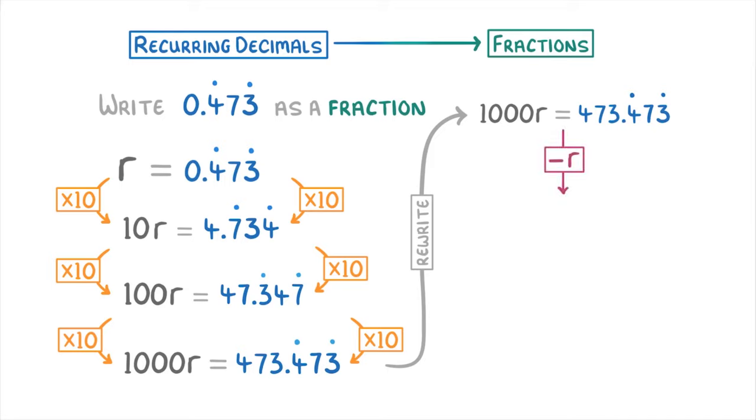Next, if we now subtract a single r, which remember has a value of 0.473 recurring, from that 1000r, we'll be left with 999r. But importantly we'll have completely removed the recurring decimal places from our equation and so we'll only have 473 left.